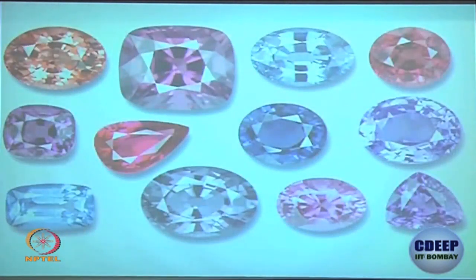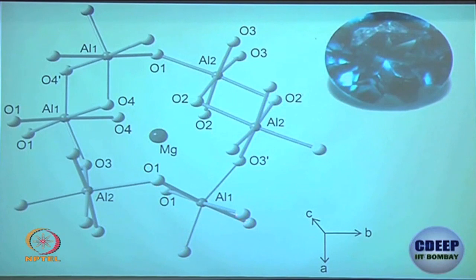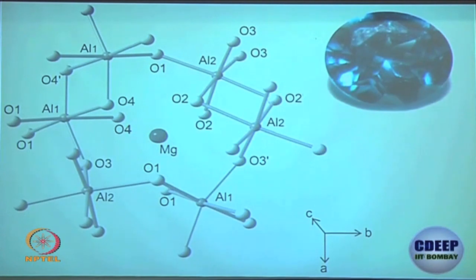Looking at the structure: magnesium is in tetrahedral geometry and aluminum is in octahedral geometry. You can count — each aluminum has six ligands (octahedral), while magnesium has four ligands (tetrahedral). It may look complicated, but if you look at the unit cell and break down the complex structure, this becomes clear.